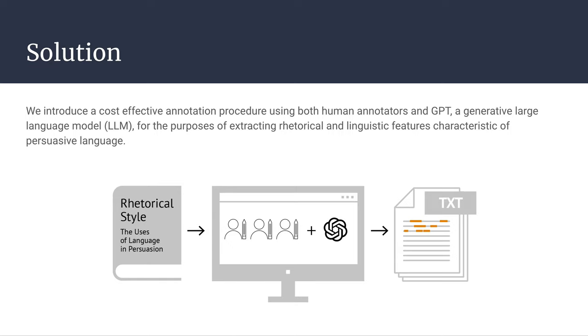We pay human annotators to label 350 sentences, and we use these annotations to experiment with GPT, a generative large language model, to annotate the remaining data.